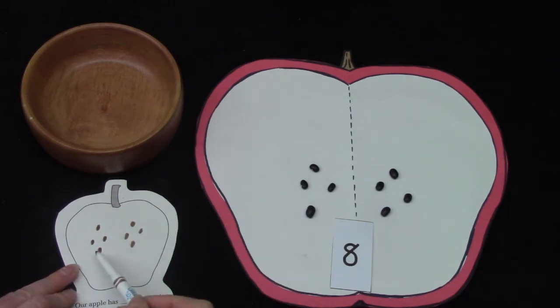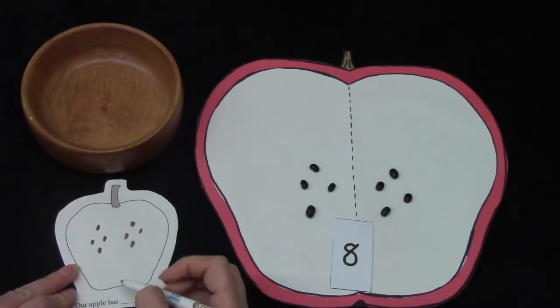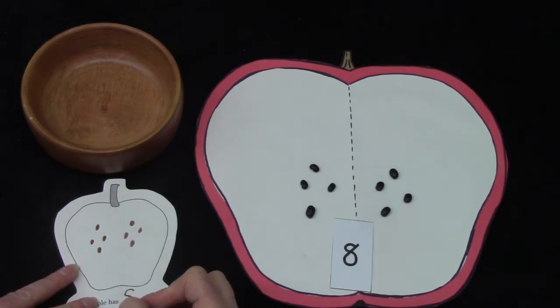If our apple has four and four seeds, how many does it have all together? You're right, it is eight.